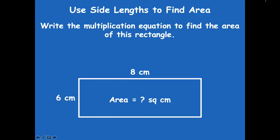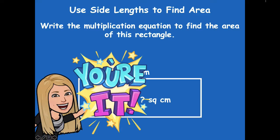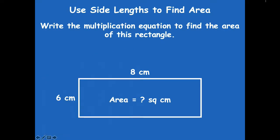Write the multiplication equation to find the area of this rectangle. Go ahead and pause the video, write your multiplication equation and solve, and then click play when you're ready to go over it together. Six times eight equals 48 square centimeters. Remember, we have to add in that 'square' when you are finding the area.